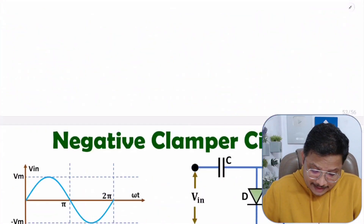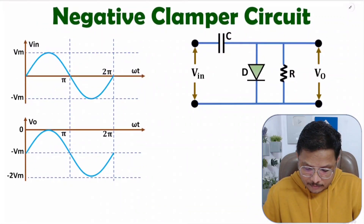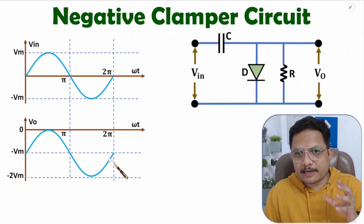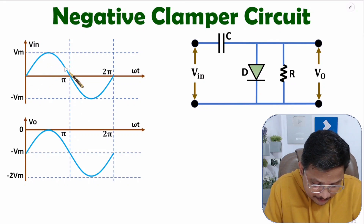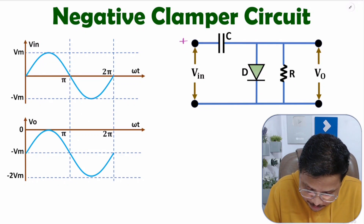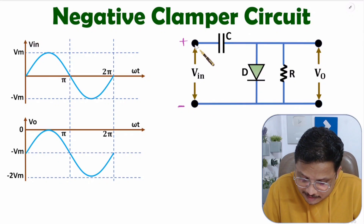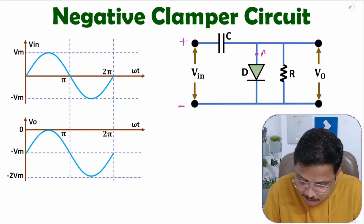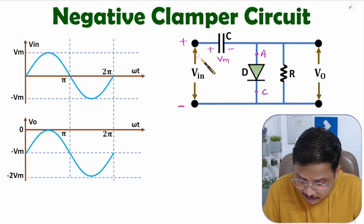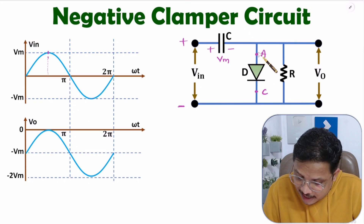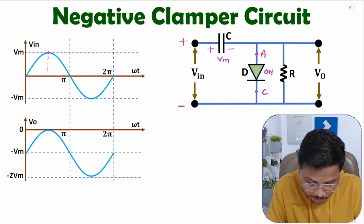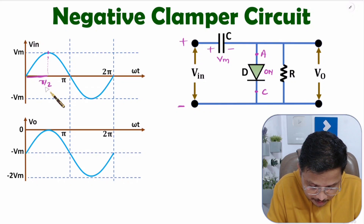Now I will explain the negative clamper. In the negative clamper, this is the steady state output, but you need to understand the working with respect to the first positive and first negative half cycles. During the first positive half cycle, this is plus with respect to this terminal. The diode comes in forward bias — this is the anode and this is the cathode — so the diode comes in forward bias. This means the capacitor is getting charged as per plus-minus Vm polarity, up to maximum Vm voltage. As the diode is on, output voltage is zero from zero to π/2.